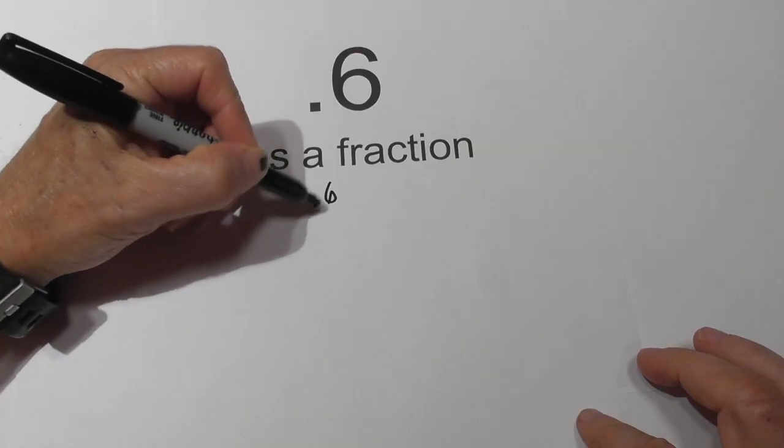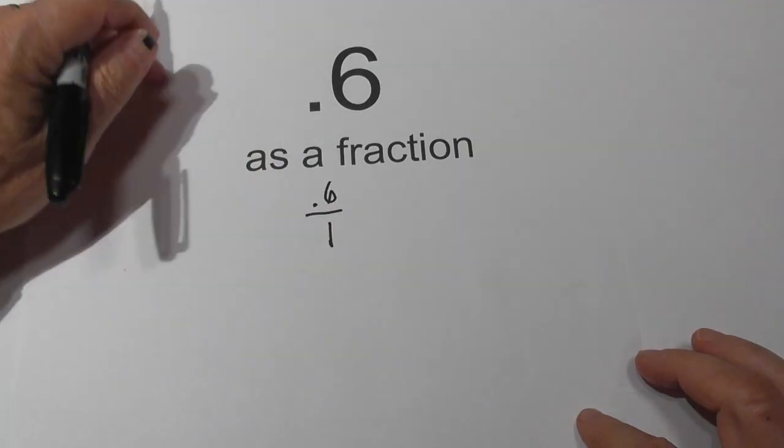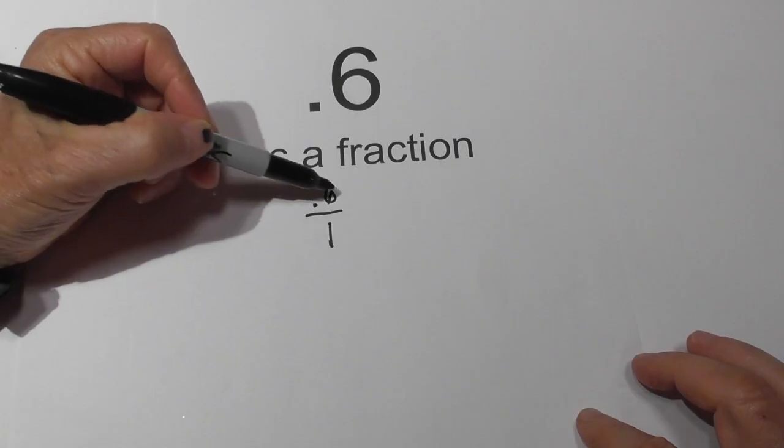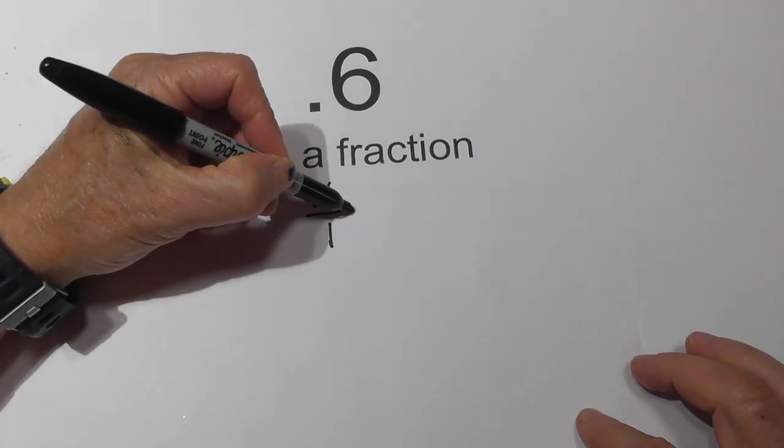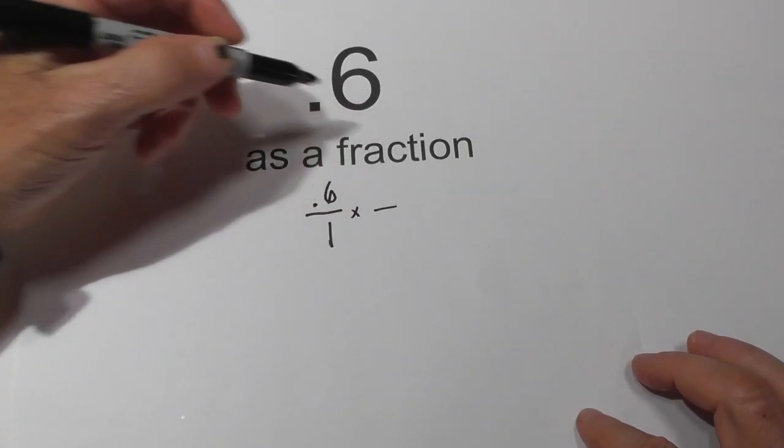We have .6 and let's put it over 1 to make it a fraction. Now what we need to do is get rid of the decimal. And there's two ways we can do this. We need to multiply it by another fraction.